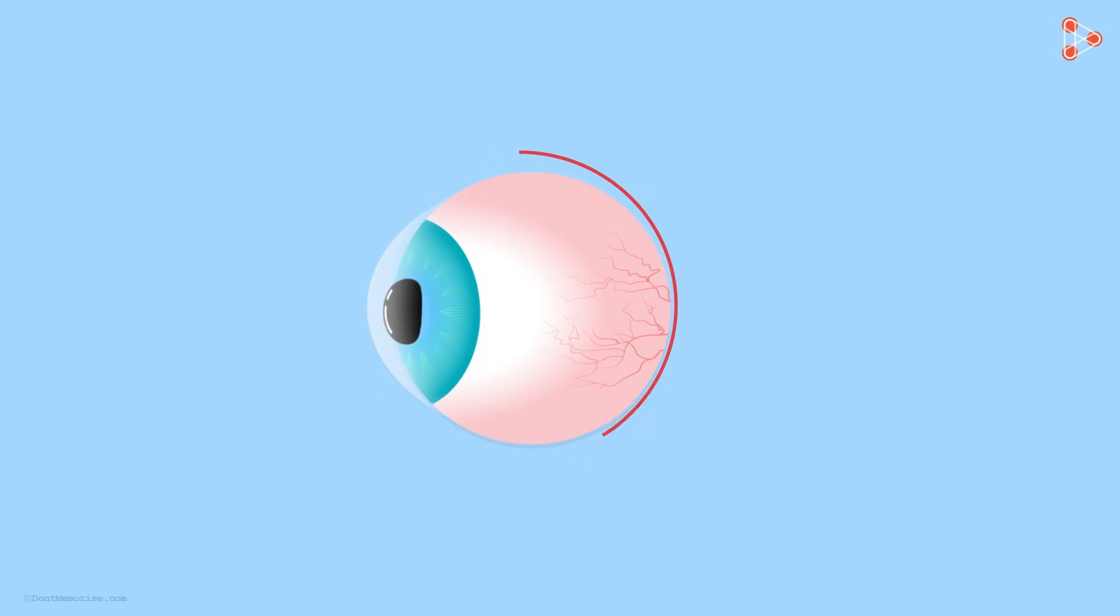The human eye is roughly spherical in shape. What we're going to do in this video is understand the different parts of the eye in short, not in extreme detail. Let's begin.